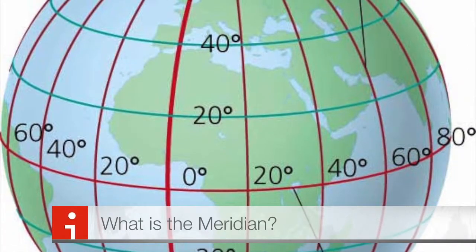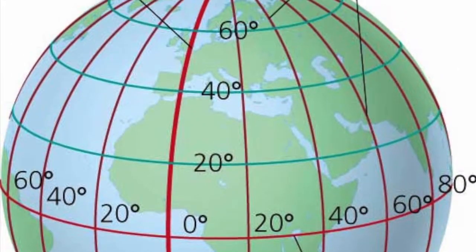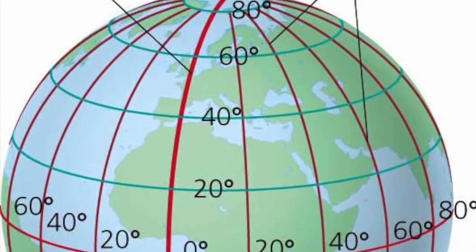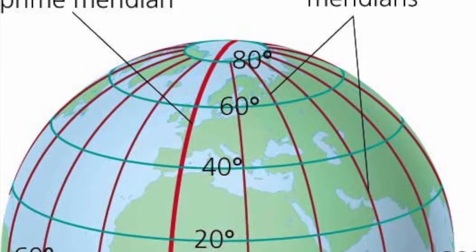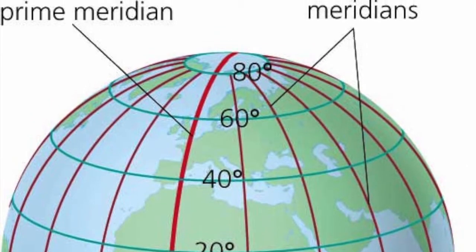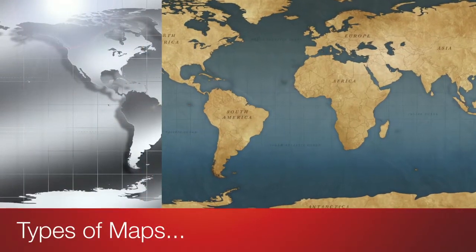What is the meridian? The meridian are lines of longitude that run around the earth between the north and south poles.